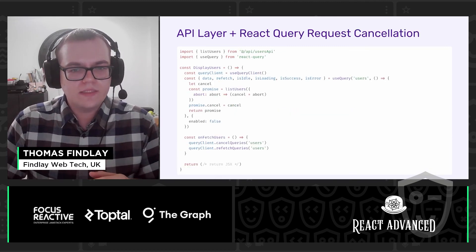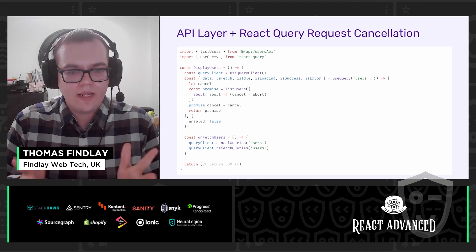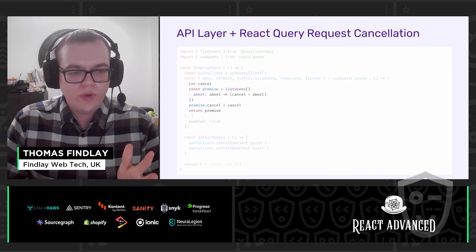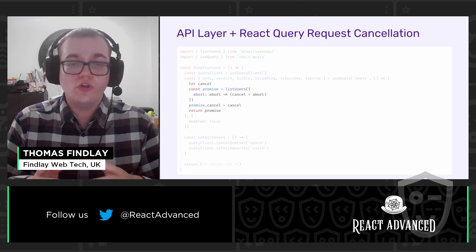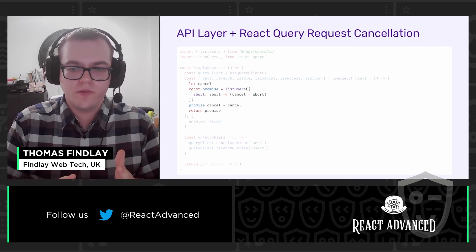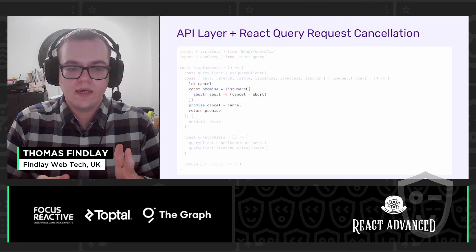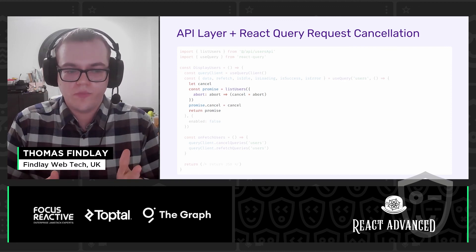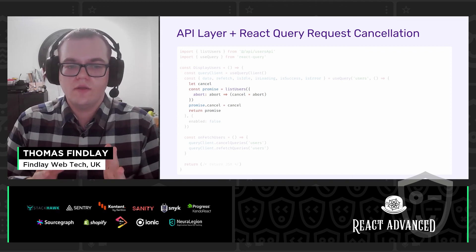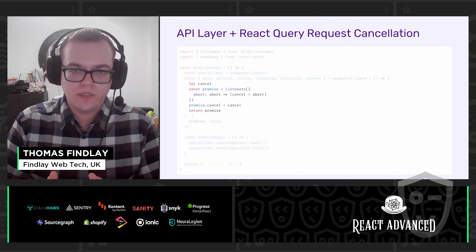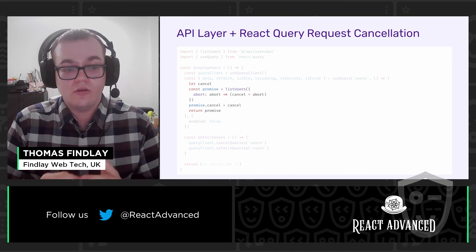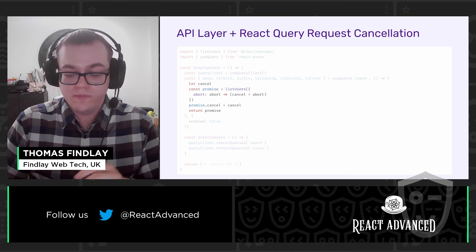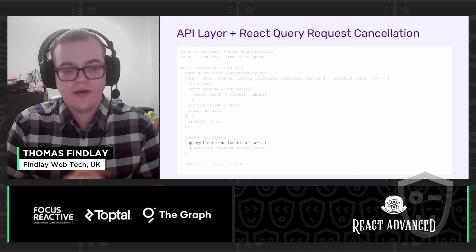And how can we cancel requests when using the API layer with React Query? We can again pass an abort property. However, this time we're not using a ref — instead we have a cancel variable, and we assign the cancel method passed through the abort property to this cancel variable. The way React Query works is that it expects a cancel property to be available on the promise that is returned, so that's why we do it this way. It's also very concise and clean. And if you want to cancel the request, you just need to call cancelQueries.